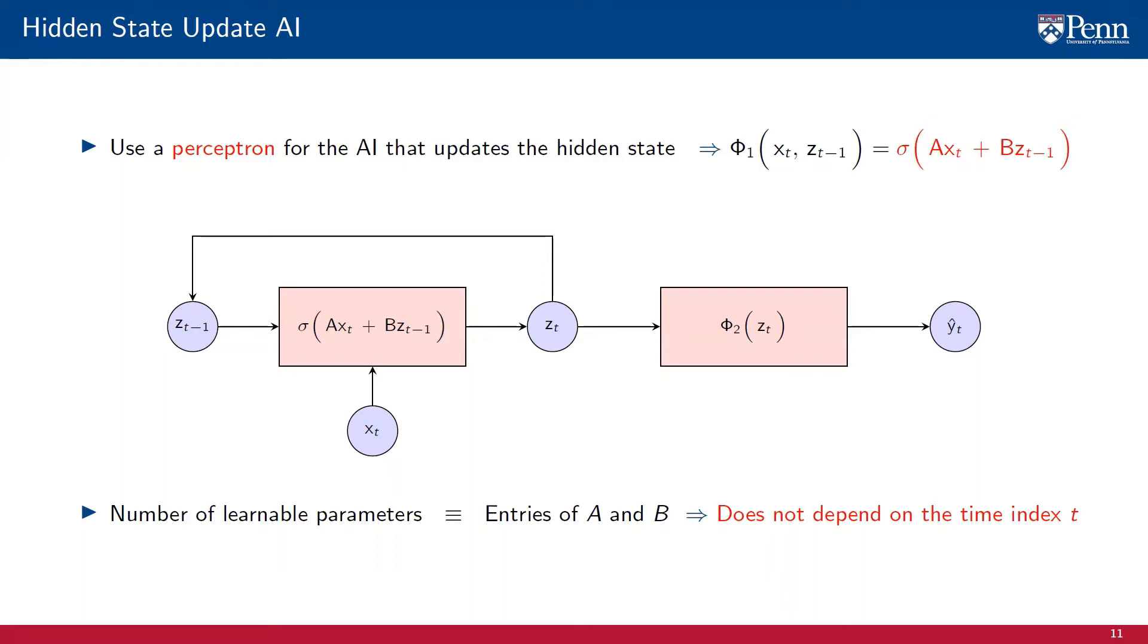Note that the number of learnable parameters does not depend on the time index t. That regularity prevents the number of learnable parameters from growing too large. And it also allows execution in sequences of variable length, which is another important property that RNNs have.